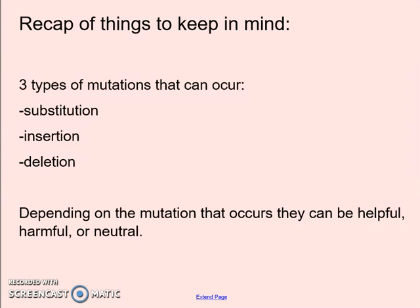To recap: the three types of mutations that can occur are substitution, where a switch is happening; insertion, where you're adding extra base pairs; and deletion, where some segment is taken out or lost. Depending on the type of mutation and the situation, mutations can be helpful — like albinism in a snowy environment; harmful — like hemophilia, where you're not able to stop your bleeding; or neutral — like heterochromia, where having two different colored eyes doesn't really impact your day-to-day life. And that's what you need to know about genetic mutations.